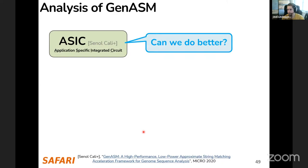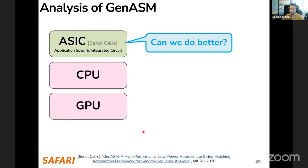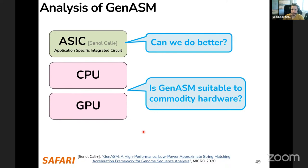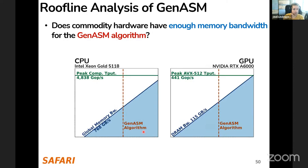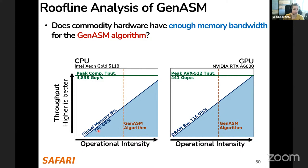Scrooge includes three novel algorithmic improvements addressing inefficiencies in GenASM, plus efficient open-source implementations for CPUs and GPUs on GitHub. Scrooge consistently outperforms GenASM on CPU, GPU, and ASIC by 2.1x to 5.9x depending on hardware, and outperforms state-of-the-art CPU and GPU baselines including KSW2, edlib, and BiWFA. The key question is: can we do better than GenASM, especially for commodity hardware which GenASM didn't target?